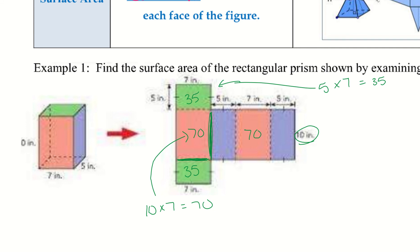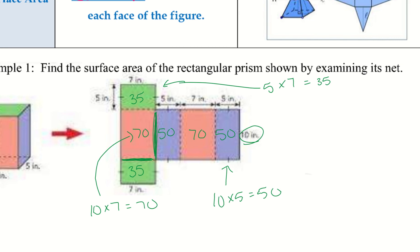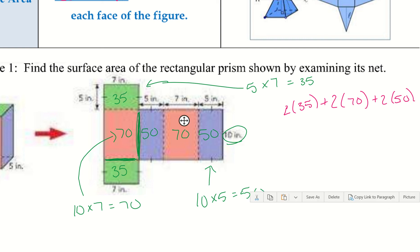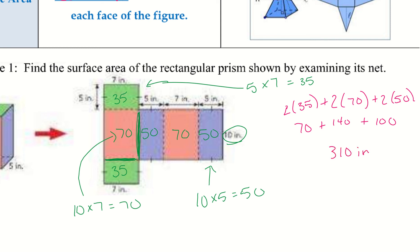For the purple areas, we have 10 by 5, so 10 times 5 gives me 50. Now I have the area of each specific face, so I can add them all together to find the surface area. I'm going to take 2 times 35, plus 2 times 70, plus 2 times 50 — instead of writing 35 plus 35, 70 plus 70, 50 plus 50, I just multiplied each by 2. That gives me 70 plus 140 plus 100, which totals 310 inches squared.